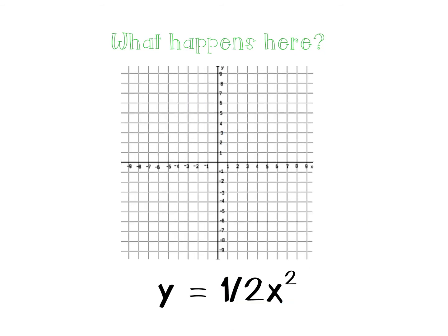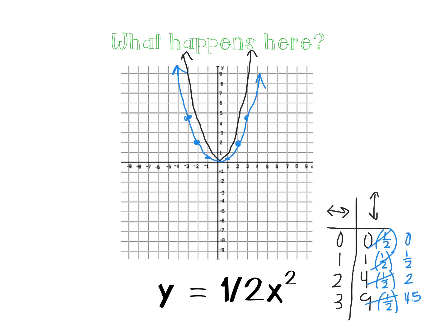Now let's remember what a value of 1/2 does. When you graph it, the curve gets compressed. Instead of following the normal parent table, I'm taking half of everything: instead of over 1 up 1, I go over 1 up a half; instead of over 2 up 4, I go over 2 up 2; instead of over 3 up 9, I go up 4 and a half. So the vertical movement has been cut in half, giving a compressed graph.